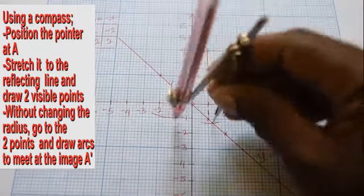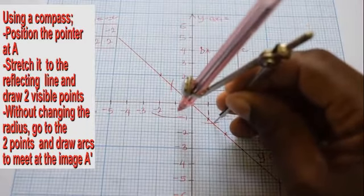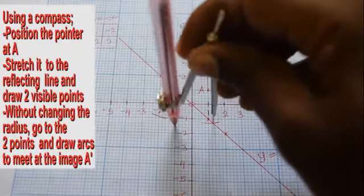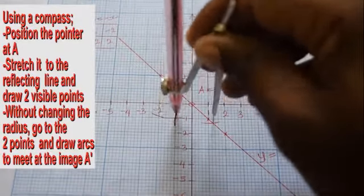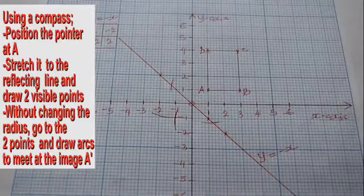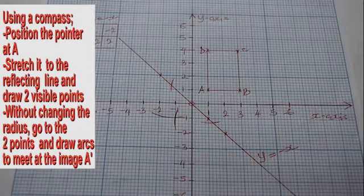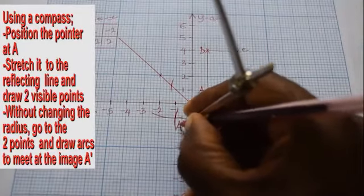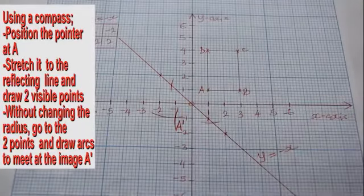Do the same for the second cross. Make a second arc and let it intersect with the first arc. The intersection of the arcs forms the image A' of the object point A.